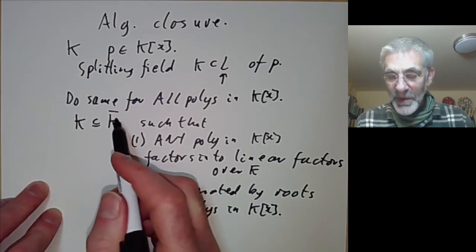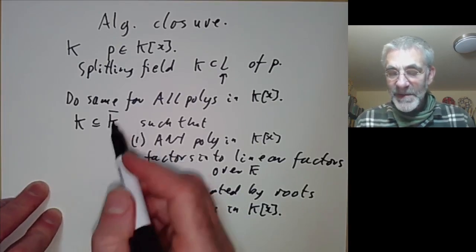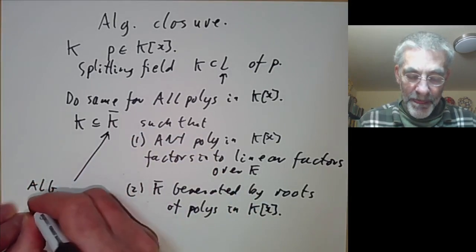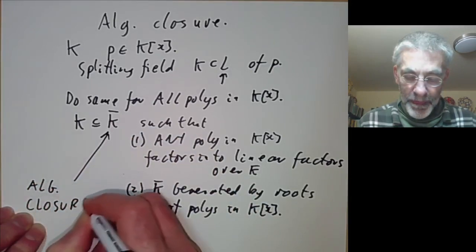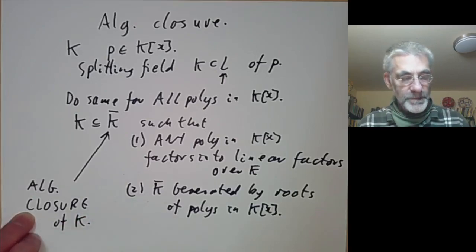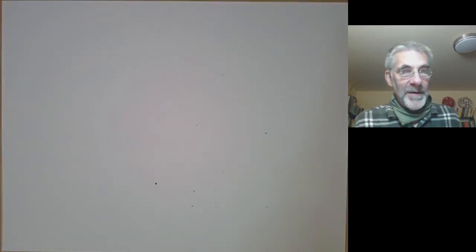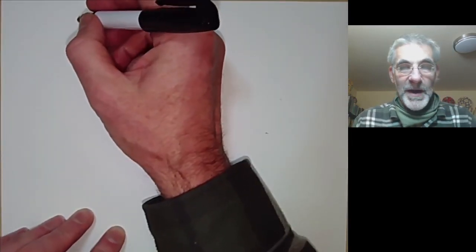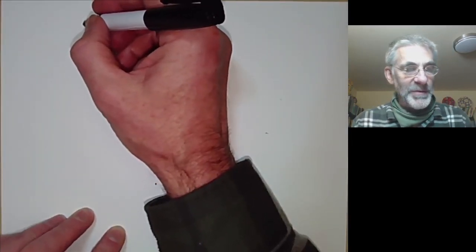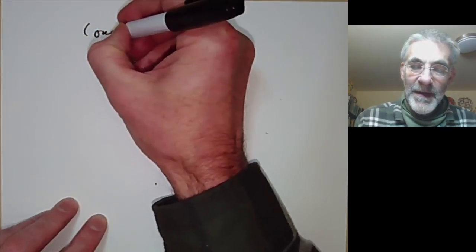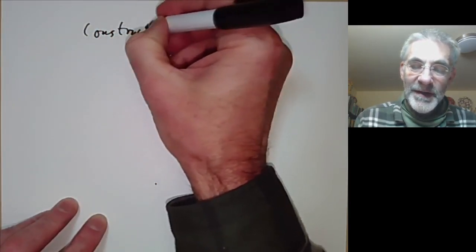And when we do that, this field is called the algebraic closure of k. The construction of the algebraic closure is very similar to the construction of a splitting field except you do it infinitely many times.